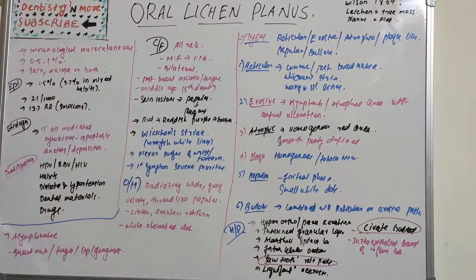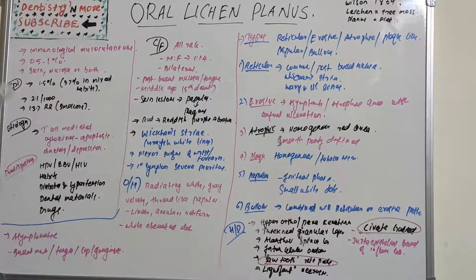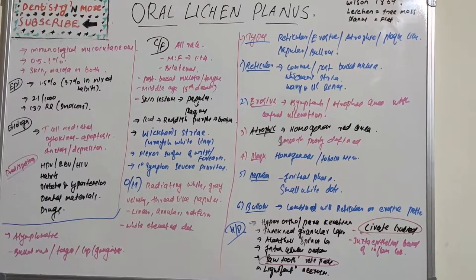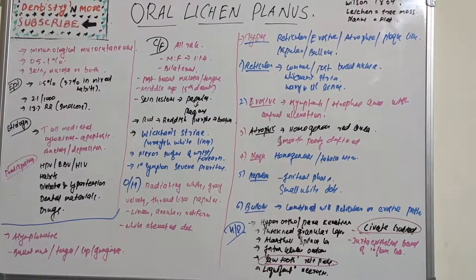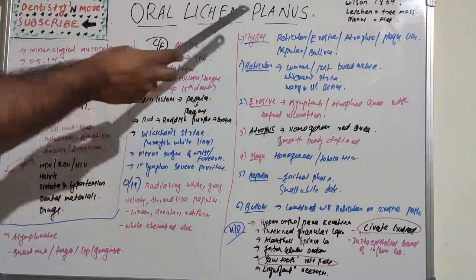The reticular type is the most common, commonly seen on the posterior buccal mucosa and less commonly on the tongue, gingiva, and lips. It is usually bilaterally seen with a characteristic pattern of interlacing white lines — Wickham's striae — often displaying a peripheral erythematous zone reflecting sub-epithelial inflammation. The lines are wavy and parallel in a reticular fashion.